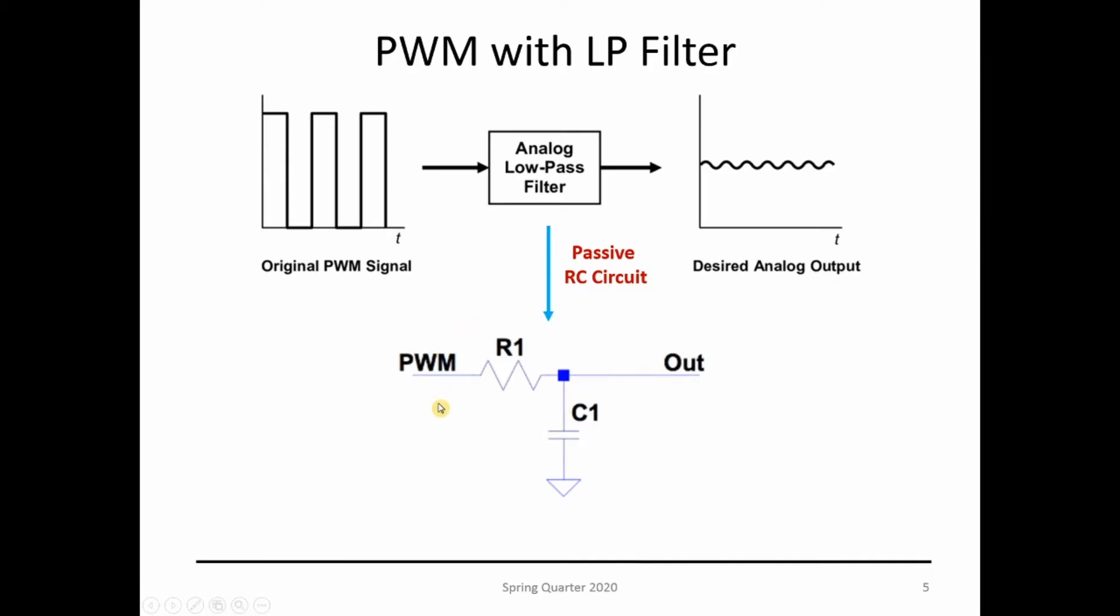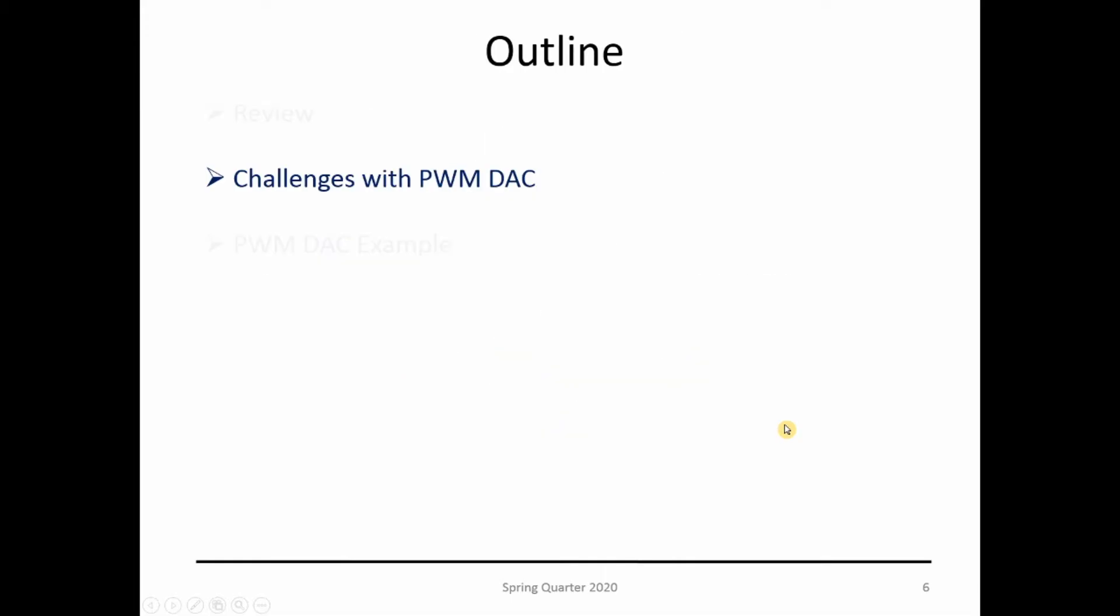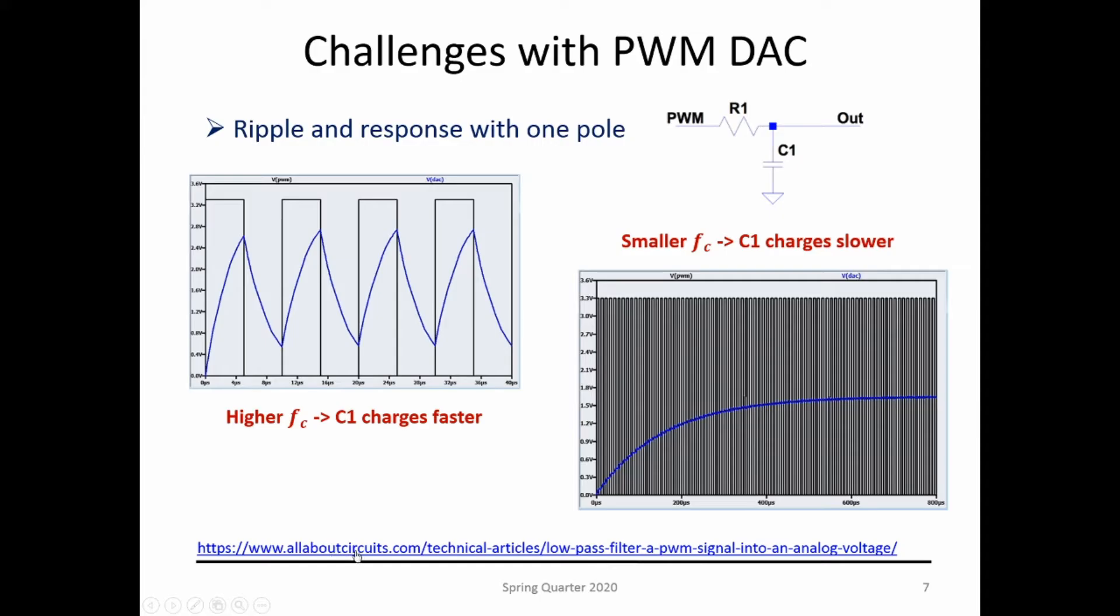There are some challenges on implementing a PWM DAC. All About Circuits does a very good job explaining that. I highly recommend going over this article for more details. Pretty much we have a ripple and response with one pole. This is just a one-pole filter. What values are you going to pick to position that cutoff frequency? If we pick a higher frequency, the C1 charges fast and tracks the PWM faster, but it has a lot of ripple.